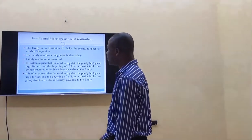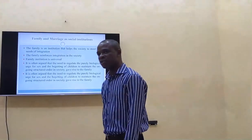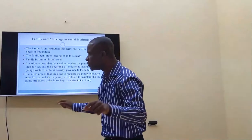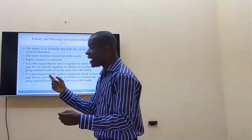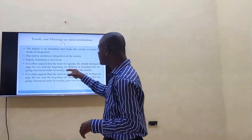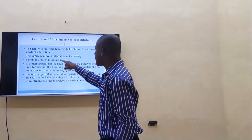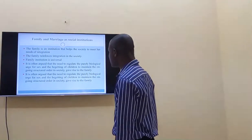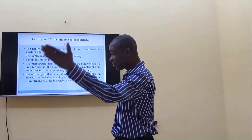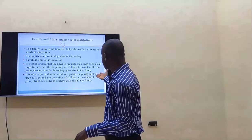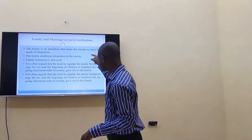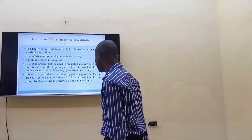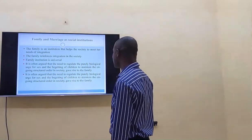Family and marriage are social institutions. We are very much interested in family in sociological studies because sociologists always say that the family is the basic social unit — it is where socialization begins, it is where you as a human being come from. Family is an institution that helps the society to meet the needs of integration. Family institution is universal — everywhere, family exists. It is often argued that the need to regulate the biological drive for sex and the bearing of children are reasons the family institution exists.